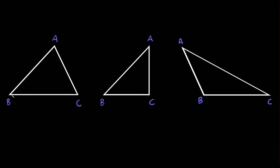We can draw a straight line, but first let's draw the midpoints of the sides of the triangle. For the bottom side, the midpoint is about here. On this side it's about here, and on this side the midpoint is about there. A median goes from the vertex straight to the midpoint of the opposite side.